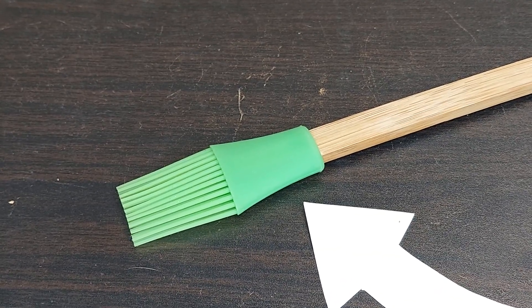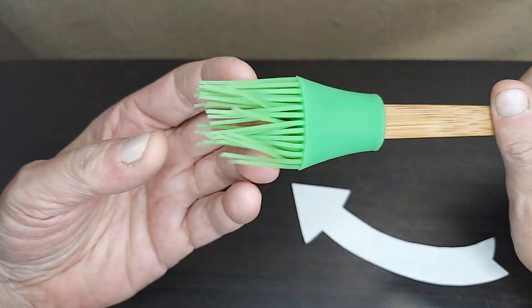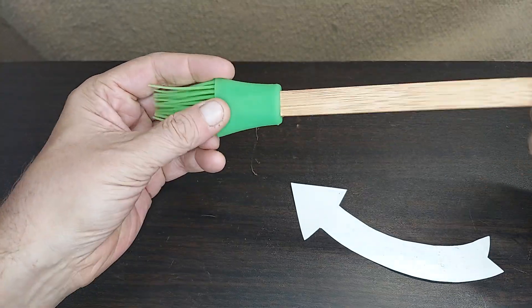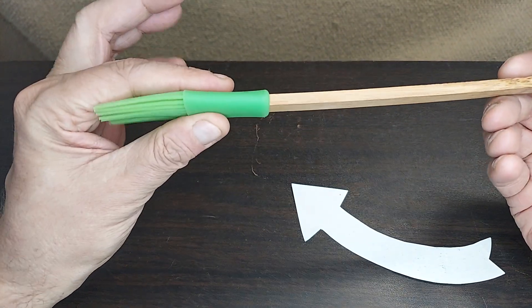Taking a look at a silicone brush. This is a brush with a bamboo handle, but it's a silicone brush head. Everything is one piece. Actually two pieces: the piece of bamboo and the piece of silicone.